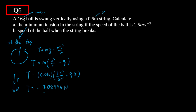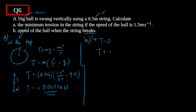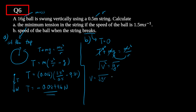That is the answer for part a. For part b, we find the speed of the ball when the string breaks. When the string breaks, tension T = 0. Setting T = 0 in the equation T + mg = mv²/r gives mg = mv²/r. The mass cancels, leaving v² = gr.